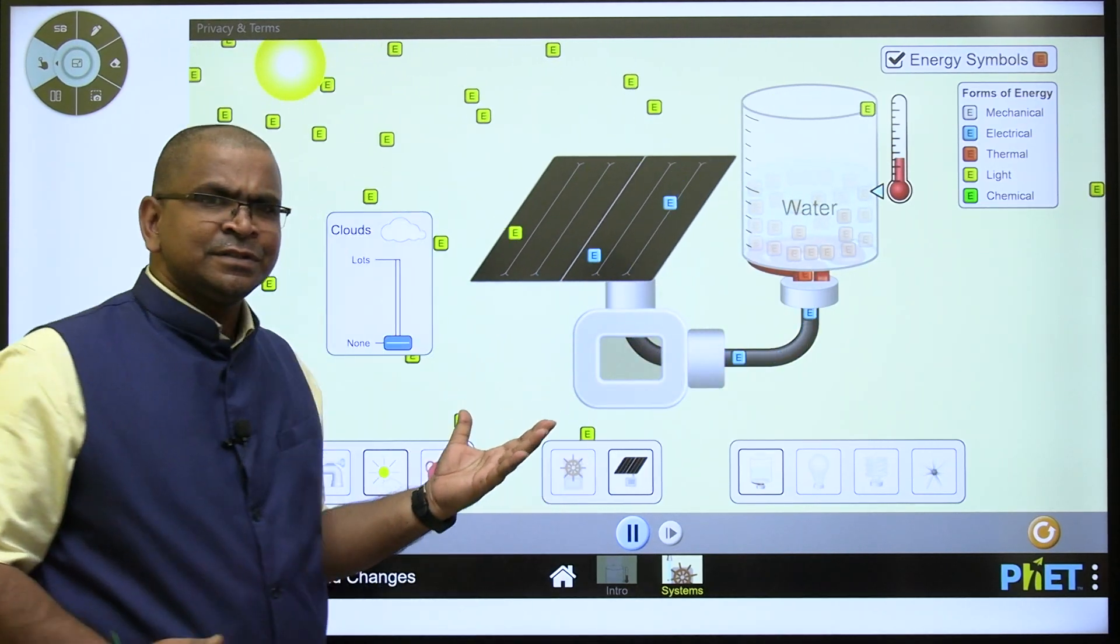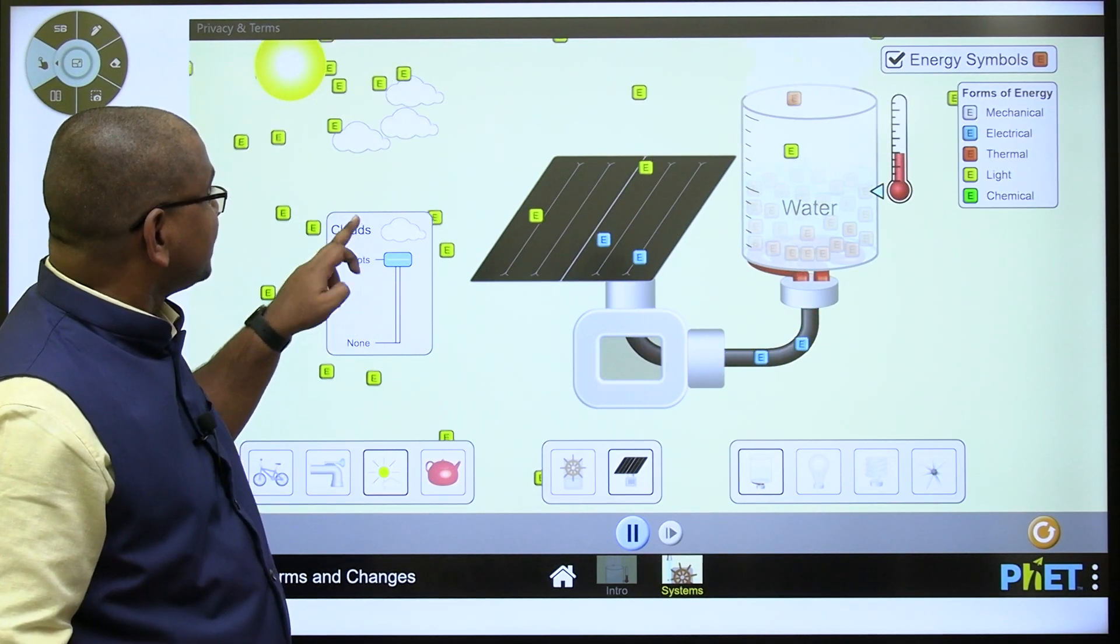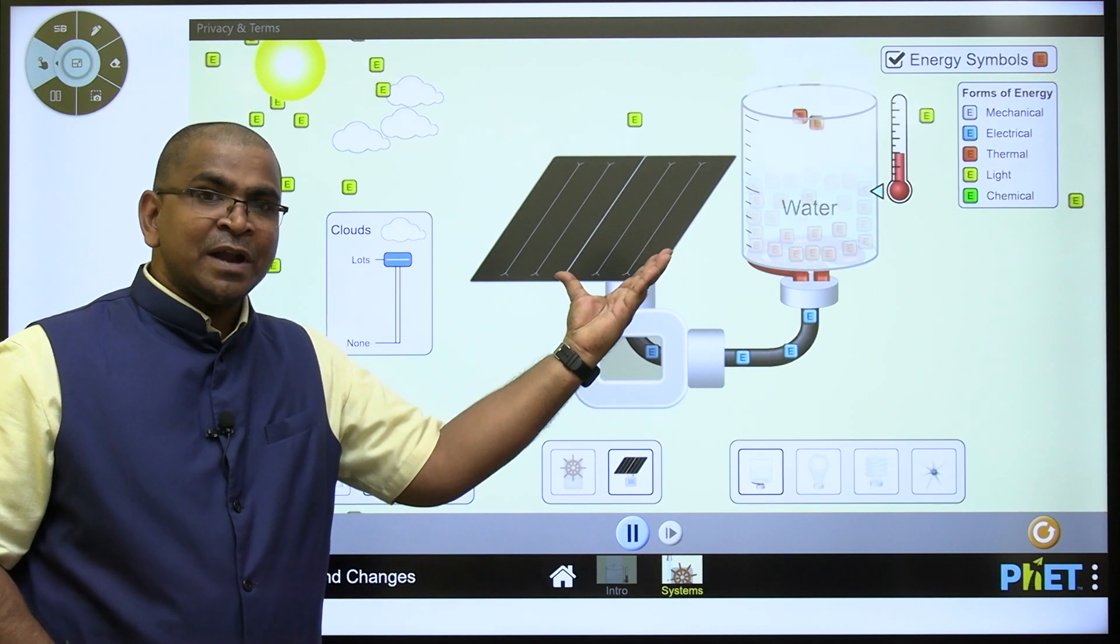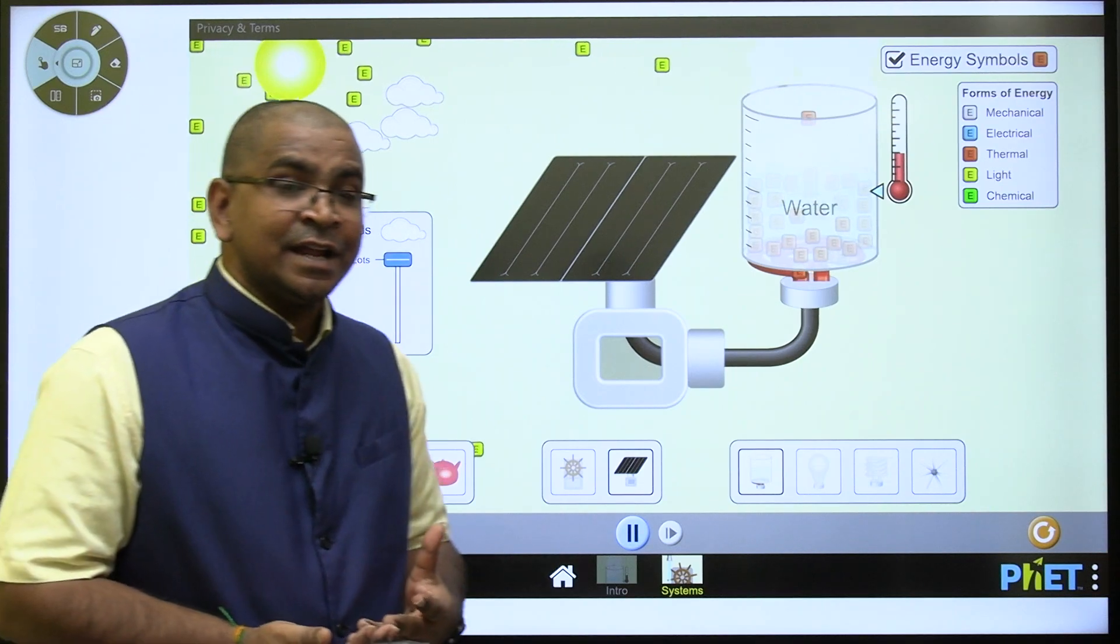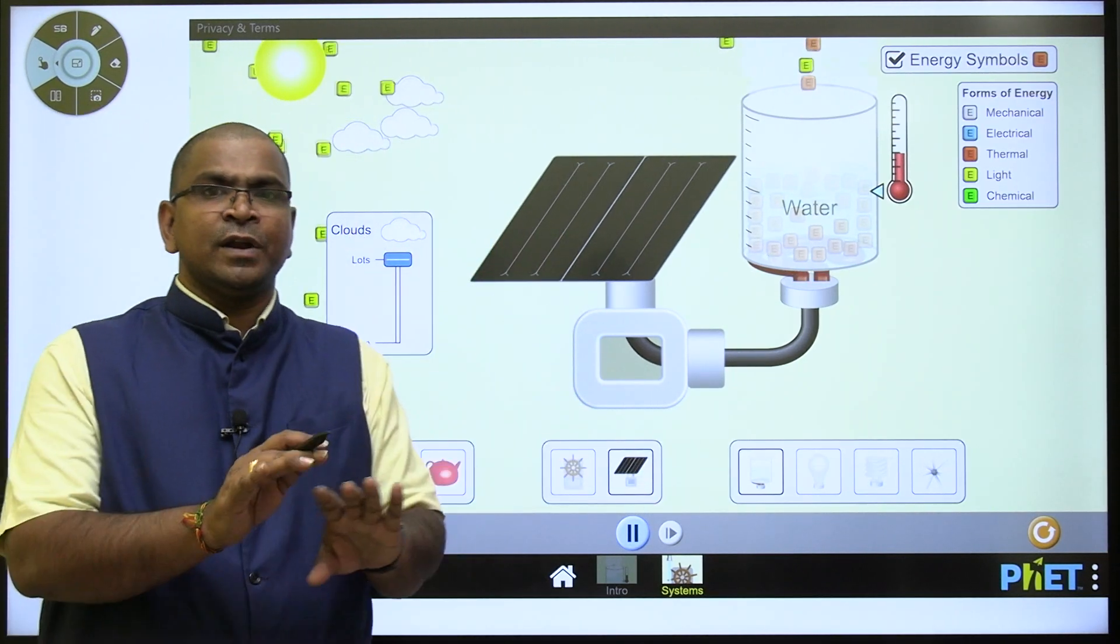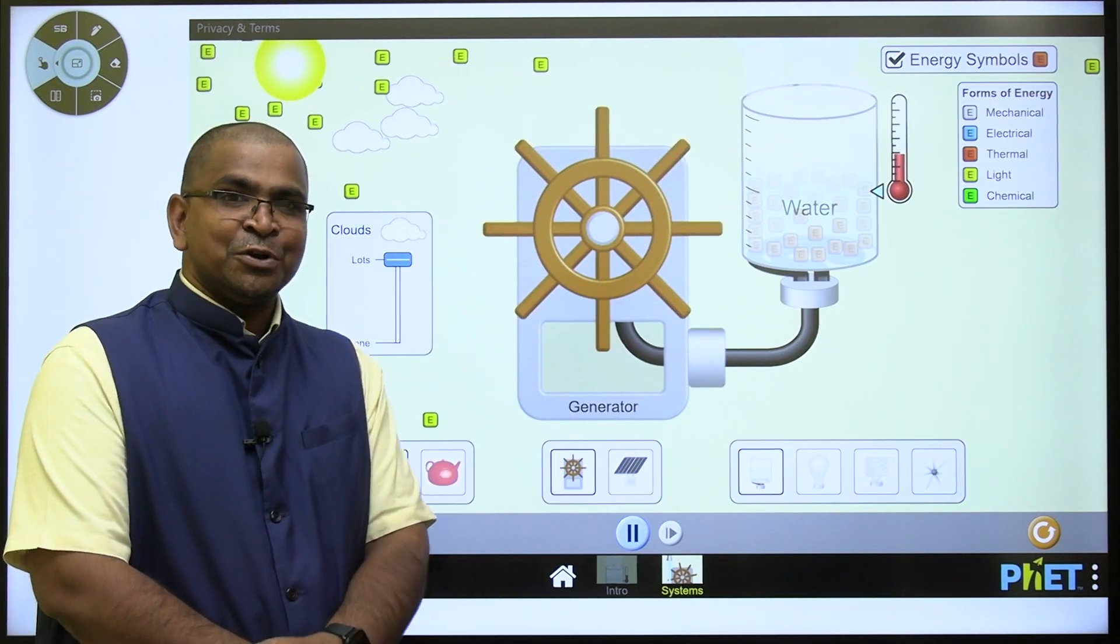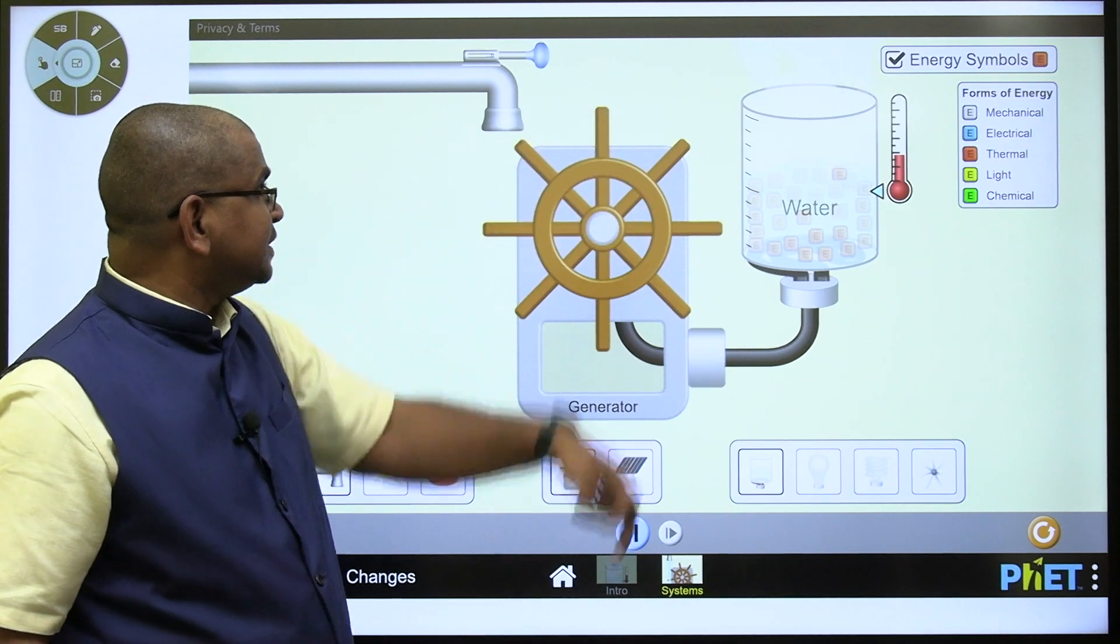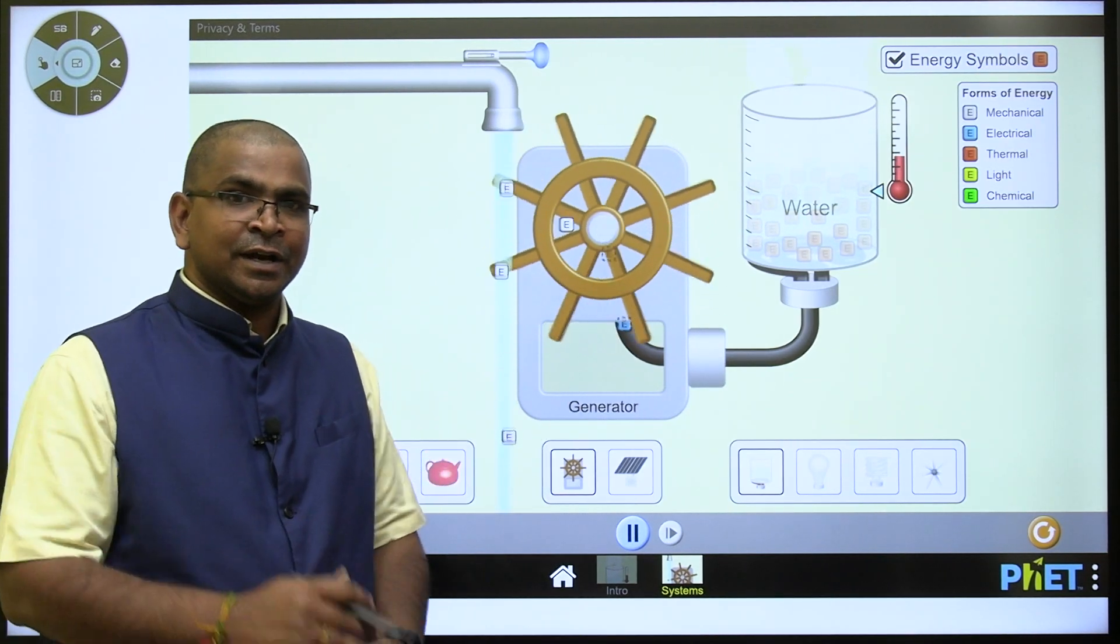Again, same process. But here you may get doubt. Suppose if there are any clouds. See here. If any clouds are there, the amount of energy available to the solar panel is less. That is why in rainy season, this solar panel won't work out. So rainy season, what should we use? We should use this hydropower station where we get the amount of water in rainy season. So with the help of this one, we can convert it or we can generate electric power.